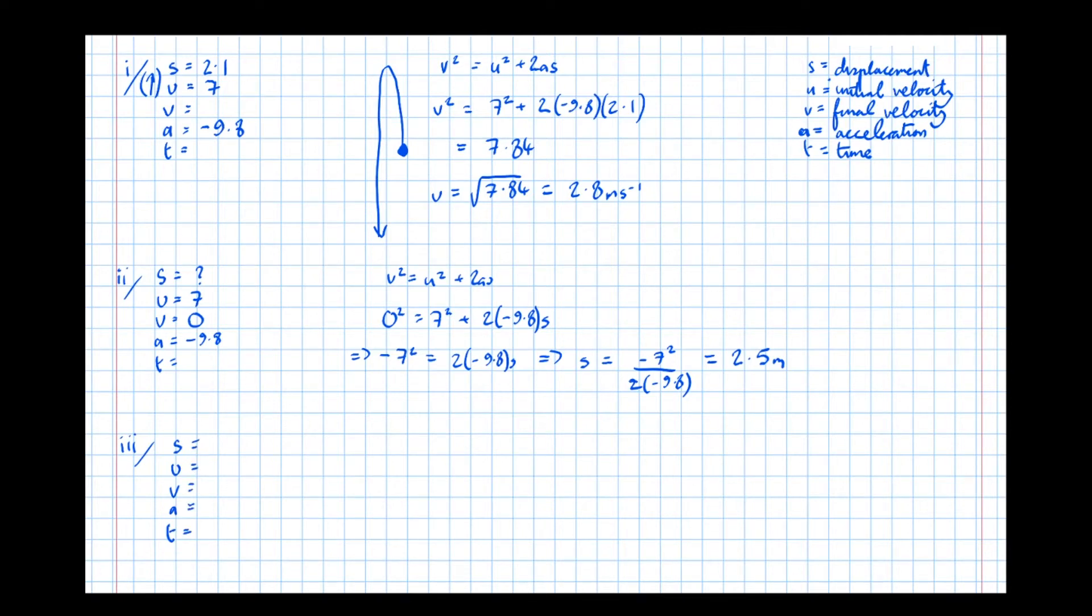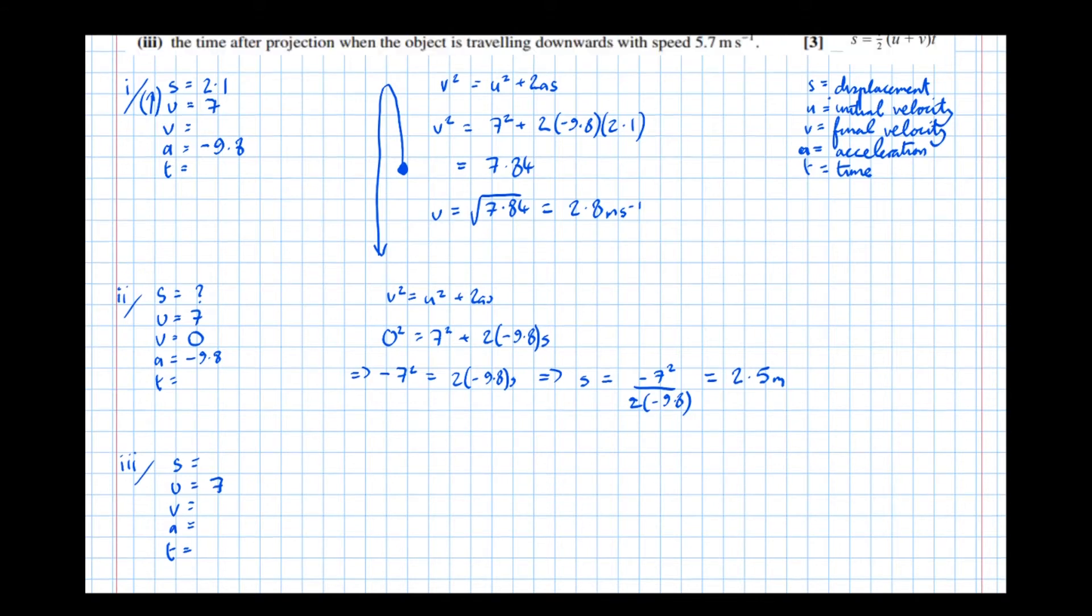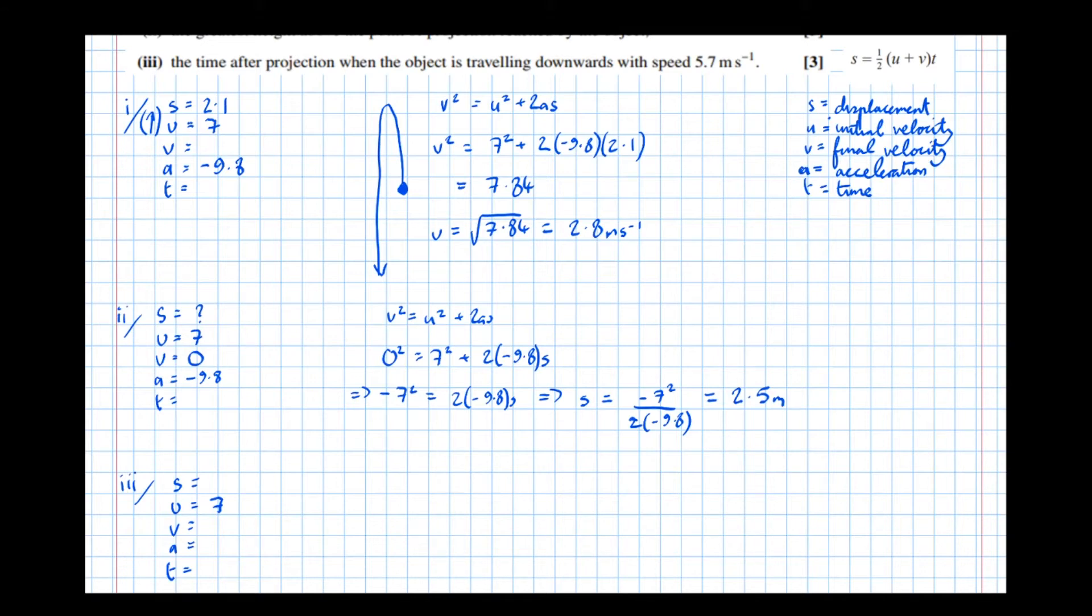So this time, we don't know the displacement. We know the initial velocity is 7 upward. We know the final velocity is 5.7 downward. That's been given in the question. But we decided right at the start of this question that up was our positive direction. That means that down would be a negative number, minus 5.7, and a is minus 9.8. But this time, it's t we're trying to find. So t is our unknown.